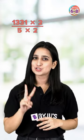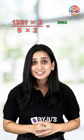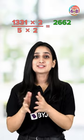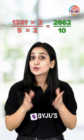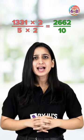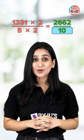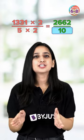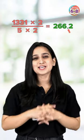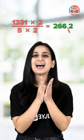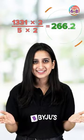So here, let's multiply both the numerator and denominator by 2. We get 2662 divided by 10. Now you see, we have 10 in the denominator, so we just move the decimal one place to the left — and here is the answer.